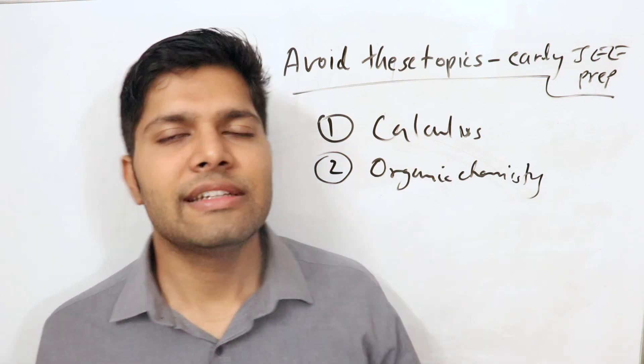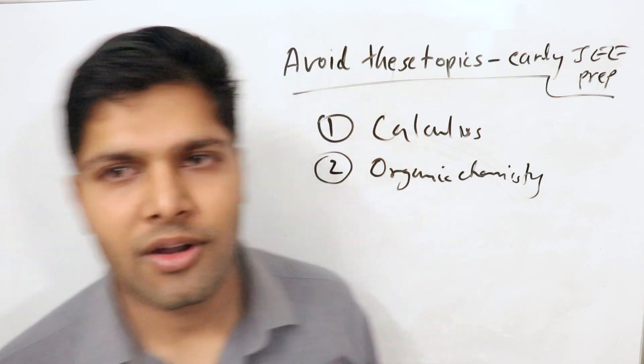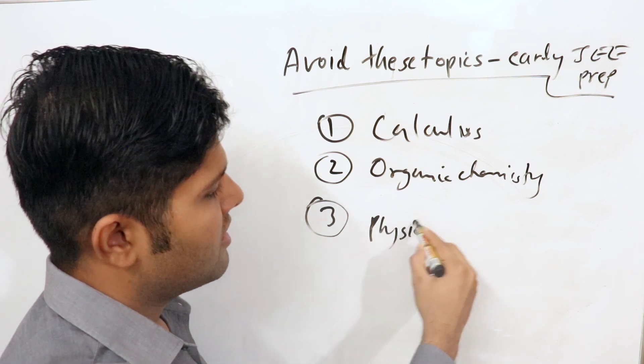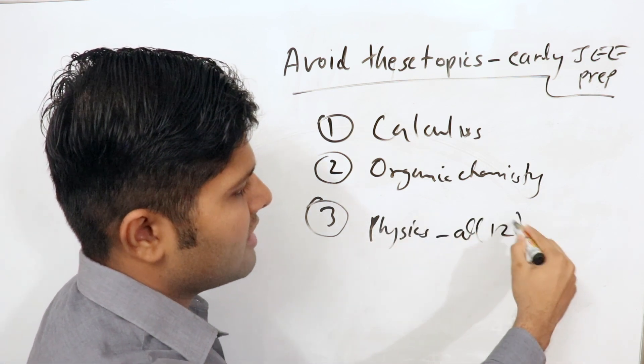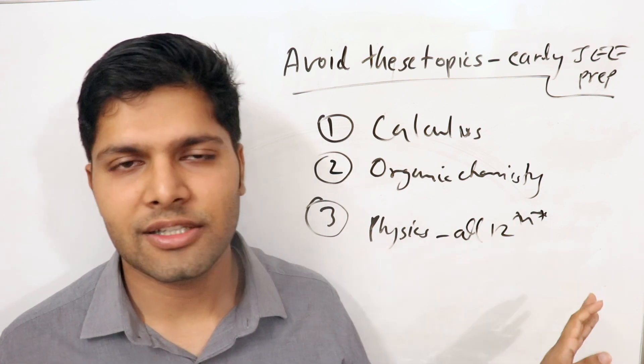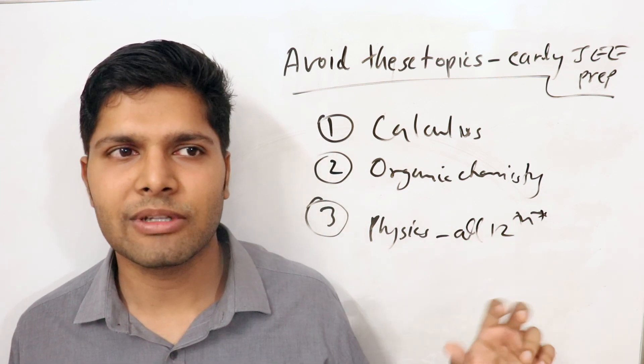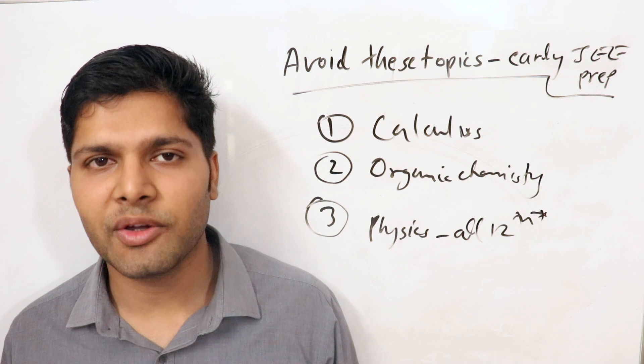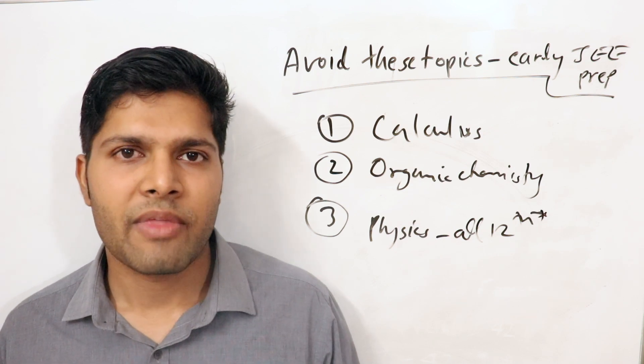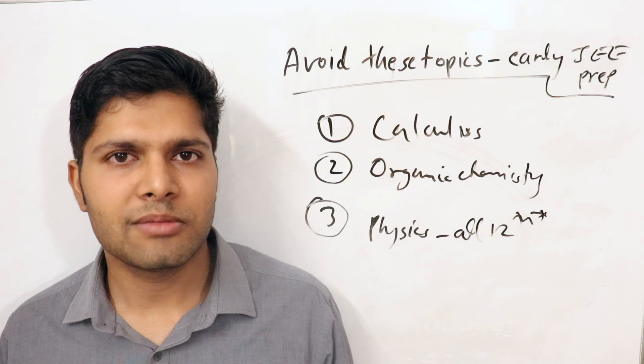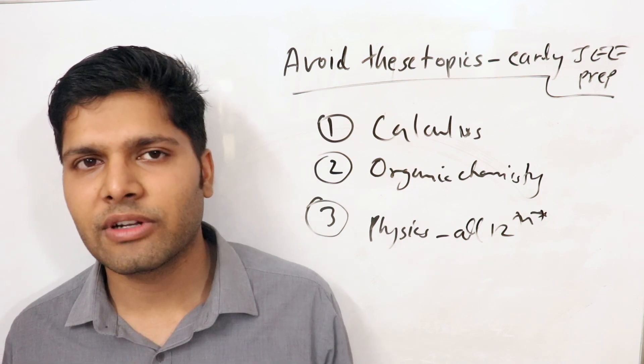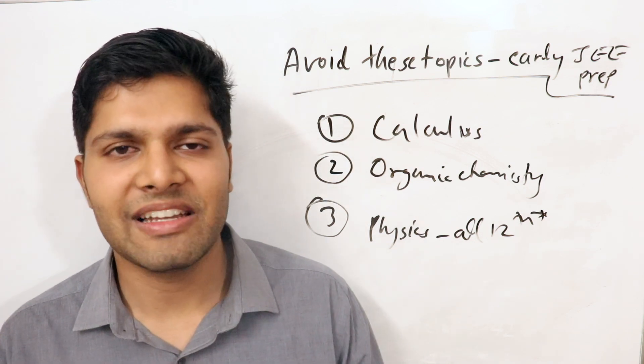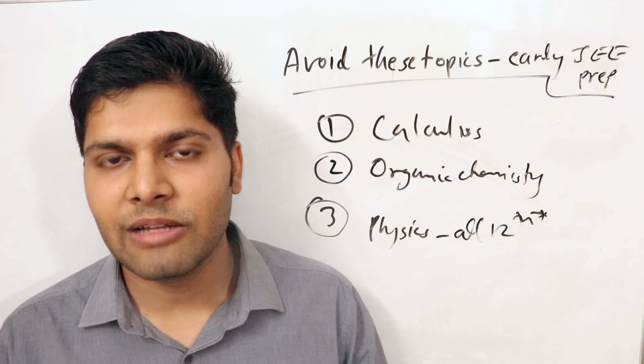The third section which I would say is in physics, all of class 12th. In physics you should not study all of class 12th except for a few chapters which are electrostatics and current electricity, I think that's it. Apart from that, you should study only and only your class 11th physics. Because if you look at class 11th physics, it is more relevant, it is more real world, it is more understandable for a ninth or tenth class student, and it's not a big jump. I mean it is a big jump obviously, but it's still understandable.